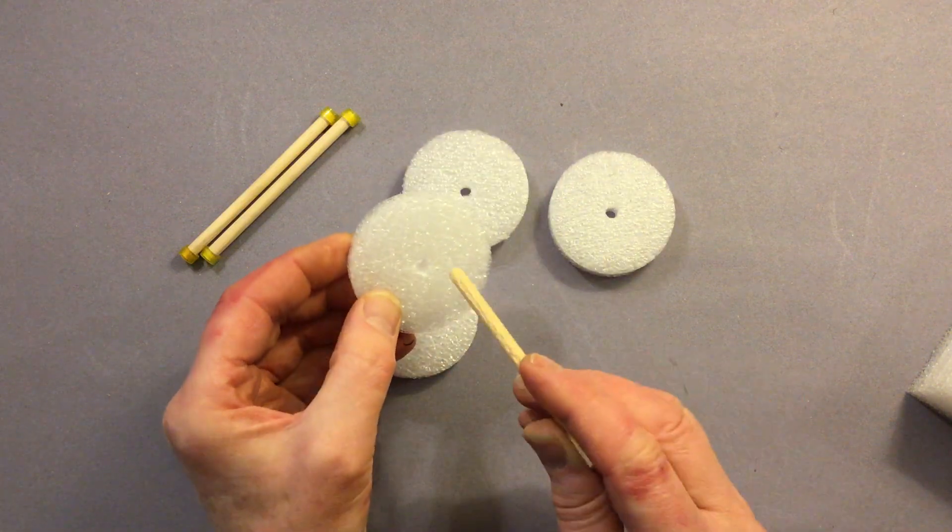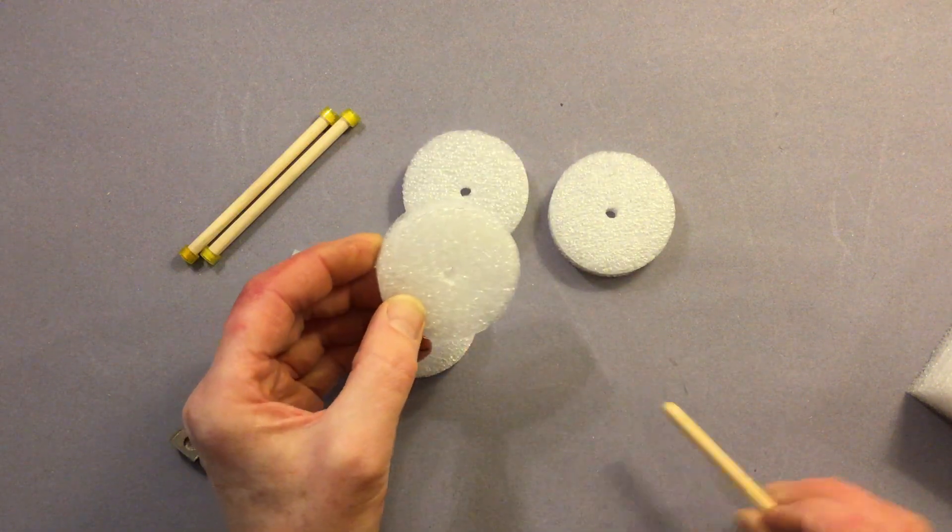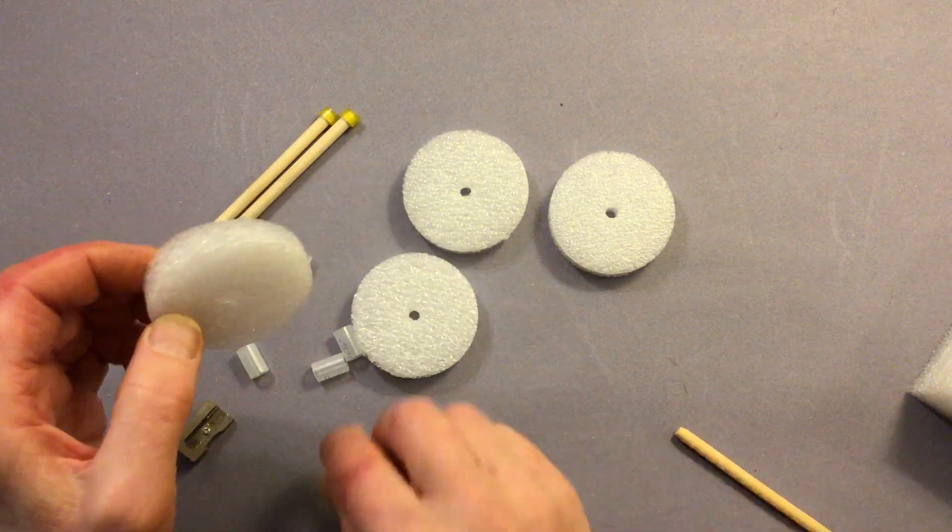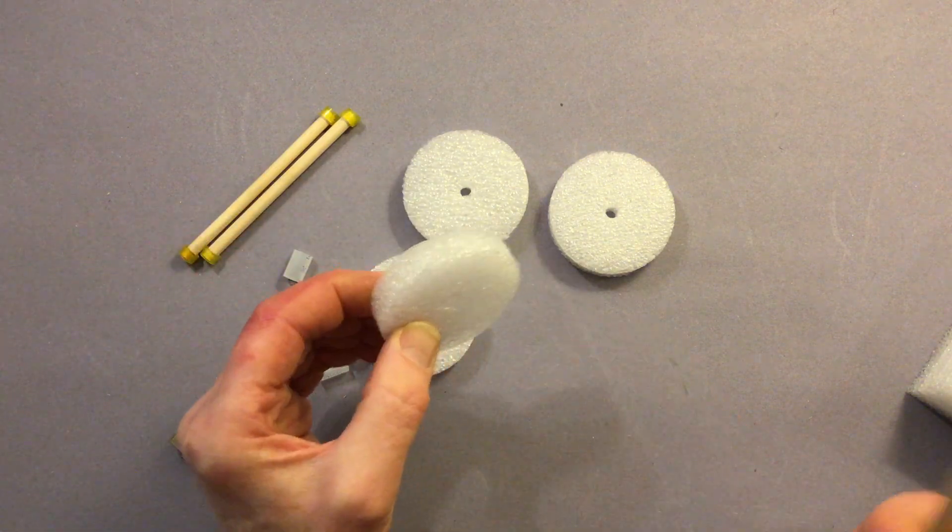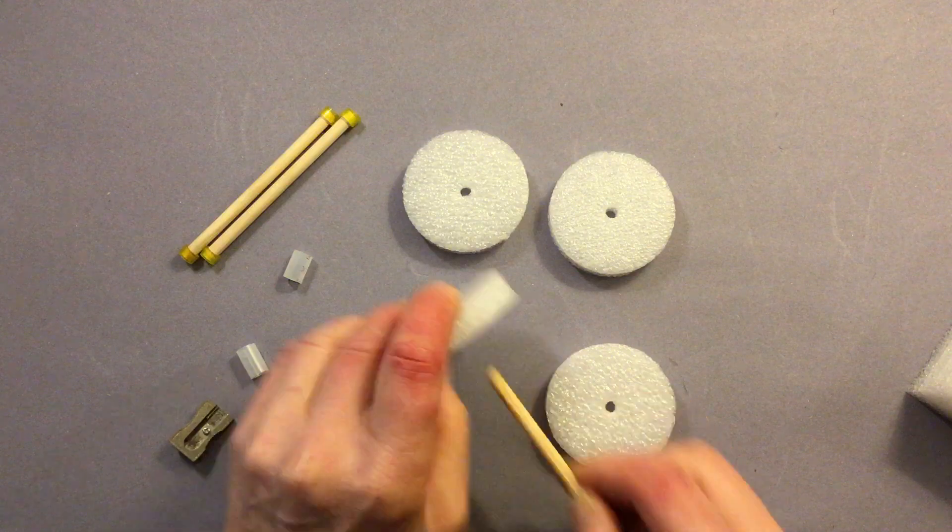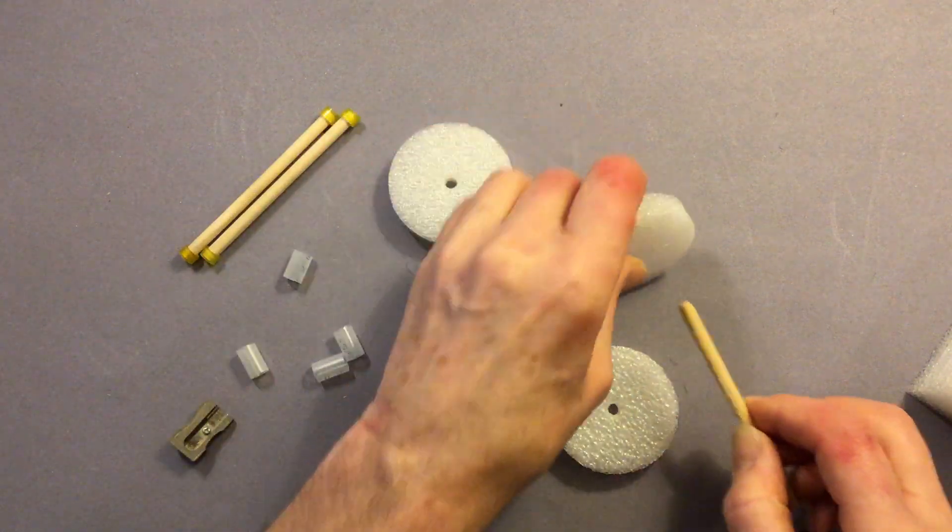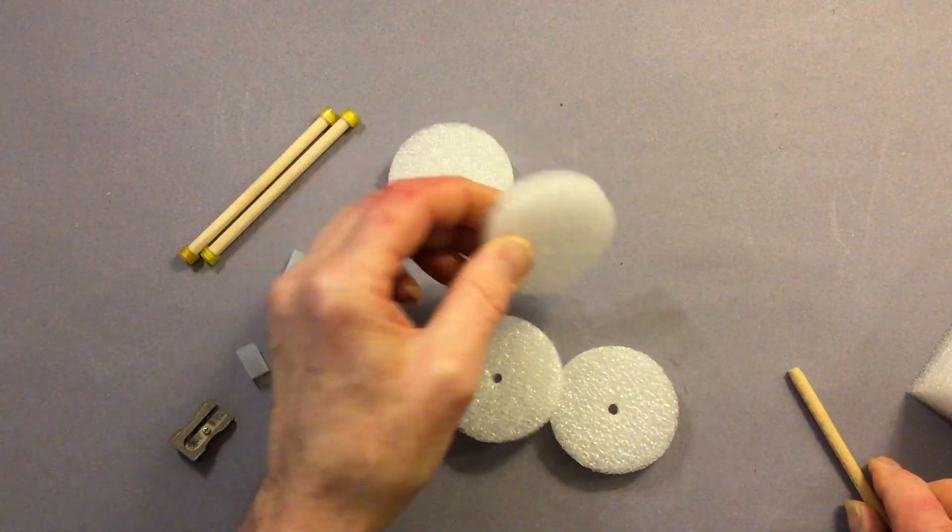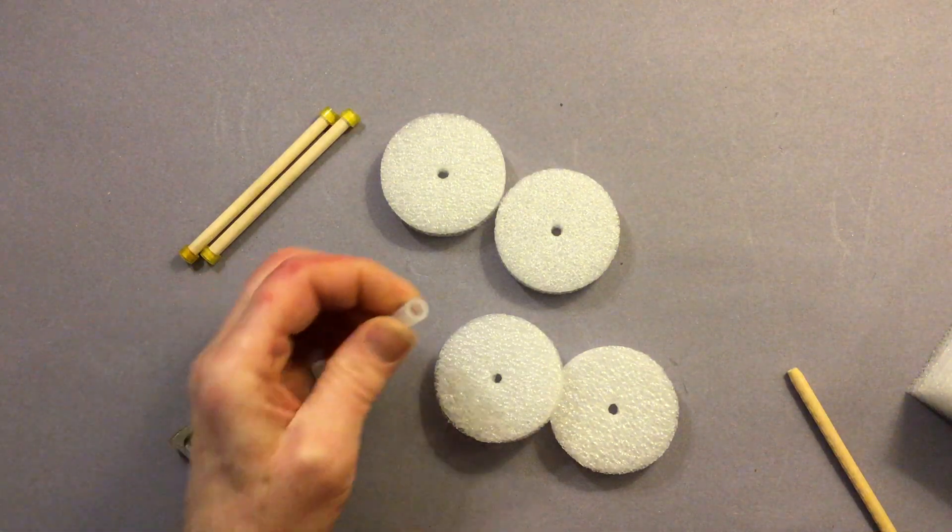Now sometimes with foam wheels you do find a little bit of foam stuck in the middle but that's not a problem, just push it out with an axle or you can use a pencil to do that and then the little wheel bearing pushes inside. It's as simple as that, push and twist.